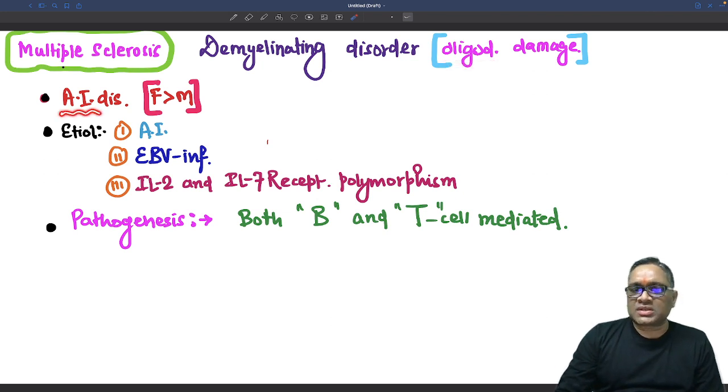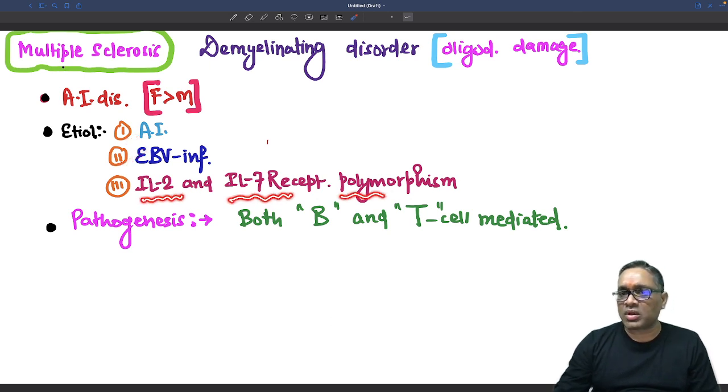Multiple sclerosis is an autoimmune disorder, commonly affecting females. There are three important etiologies: autoimmunity, infection by Epstein-Barr virus, and interleukin-2 and interleukin-7 receptor polymorphism.